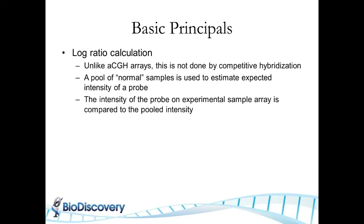What are the basic principles of SNP arrays and how do they differ from array competitive genomic hybridization (aCGH)? In both methods, DNA copy number is measured based on a log ratio of a sample to a reference. In aCGH, this is performed via competitive hybridization using a two-channel green and red system, comparing every probe to a matching reference signal. With SNP arrays, there is no competitive hybridization — a pool of normal samples is used, and every probe is measured against that probe from the pool intensity, since it is a single-channel measurement.